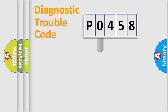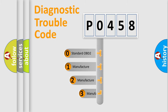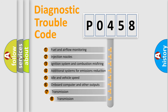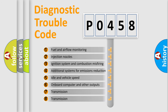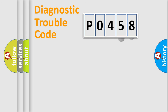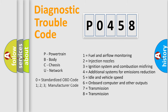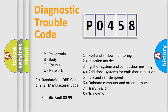This distribution is defined in the first character of the code. If the second character is expressed as zero, it is a standardized error. In the case of numbers 1, 2, or 3, it is a manufacturer-specific error. The third character specifies a subset of errors, and this distribution is valid only for the standardized DTC code. Only the last two characters define the specific fault of the group.